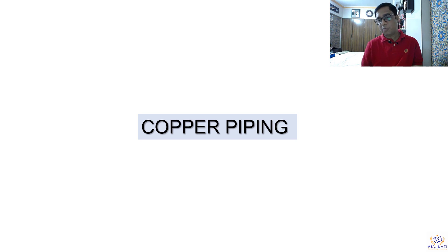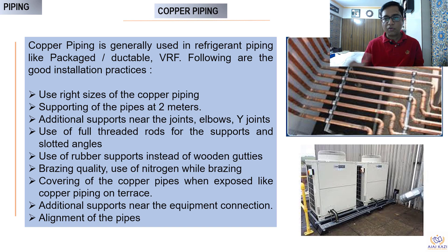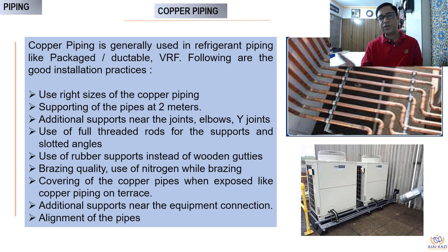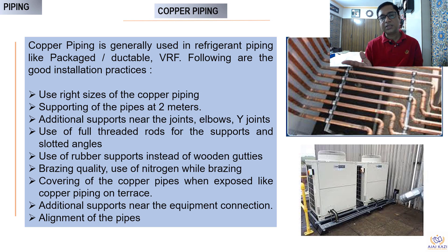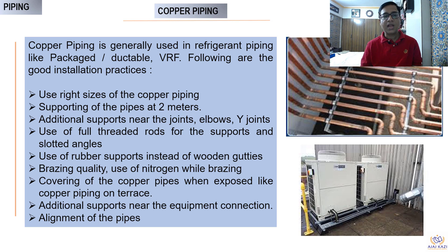Another element of piping is copper piping, generally used for DX systems and VRF systems. Looking at site photographs, we must use the right size for pump piping. Support distance varies for copper piping; while stress analysis is less critical here, supports must be provided adequately at joints and direction changes. Use rubber supports instead of wooden gatties — wooden gatties get eroded, damaged, and displaced. Rubber is the preferred material. Brazing quality is important, and using nitrogen while brazing is a key requirement for copper piping, along with proper supporting.